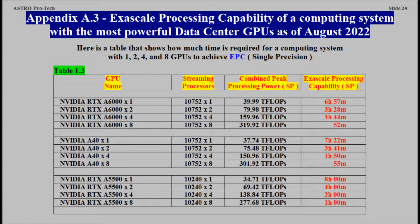Appendix A3. Exascale Processing Capability of a Computing System with the Most Powerful Data Center GPUs, as of August 2022.